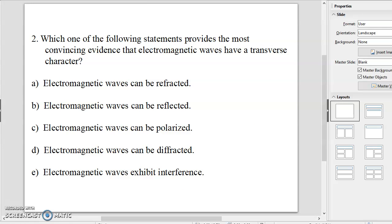Number two: which one of the following statements provides the most convincing evidence that electromagnetic waves have transverse character? And the answer, of course, is C, electromagnetic waves can be polarized. That's the answer to that one.